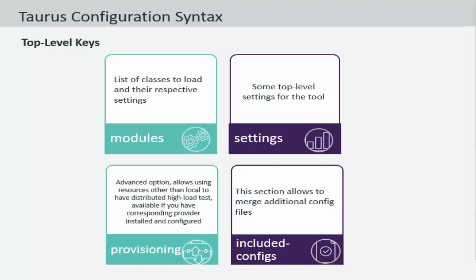Provisioning is an advanced option that allows you to decide which resources to use other than local. For example, you could set provisioning to the cloud. The included config section allows you to merge additional configuration files if you would need them — for example, it could be JARs that you use along with your Taurus configs.